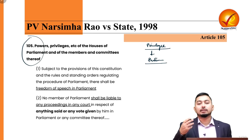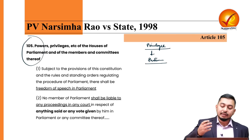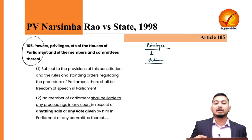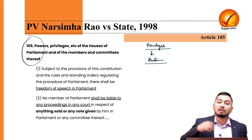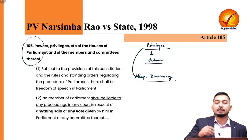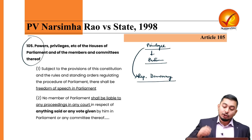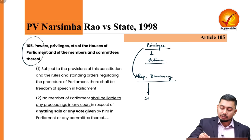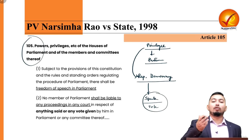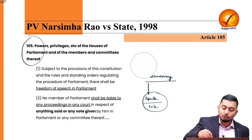Why does a parliamentarian need privileges? We as citizens have rights enshrined in fundamental rights, but parliamentarians need extra privileges because it is a representative democracy. If all of us in a constituency choose someone as our representative, they must have the courage to speak and vote immaterial of fear or favour — they must be free to represent us. Therefore, certain privileges are granted to parliamentarians.